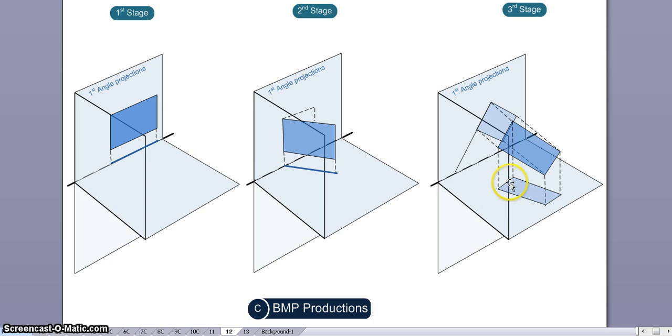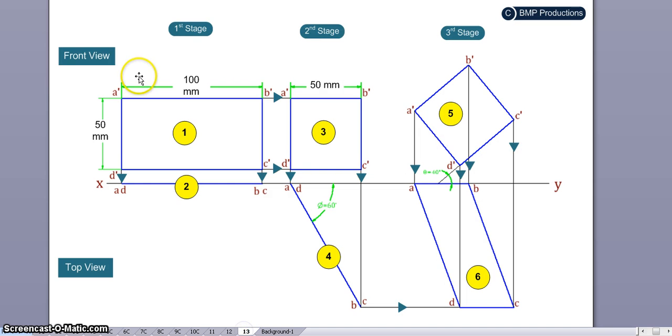So we start with this lamina, 100 by 50 mm. The corners are labeled A', B', C', and D'. When we extend the lines, they will give us A, D and B, C here.